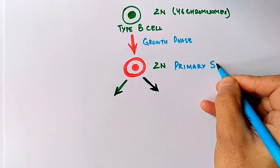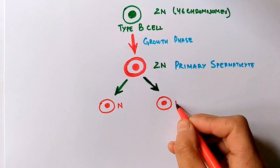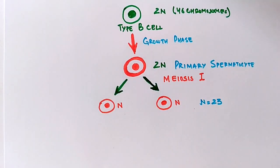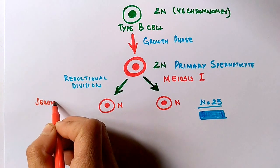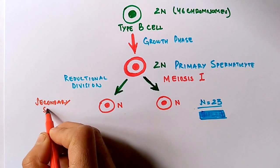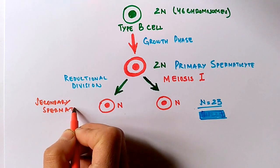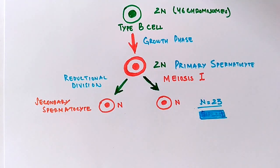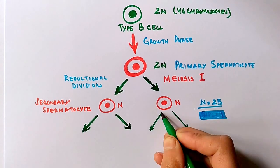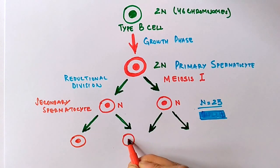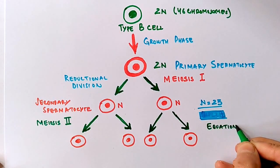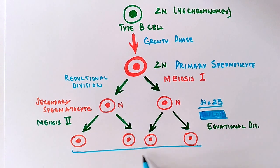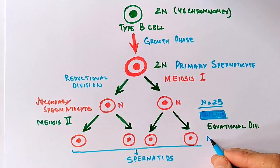The primary spermatocyte, which has 46 chromosomes, divides into secondary spermatocytes, which have n chromosomes — that is, 23 chromosomes. This division is by meiosis I, reducing the chromosome number, which is why it is called reductional division. The secondary spermatocytes further divide into spermatids, and in spermatids the chromosome number remains n — 23 chromosomes — because this is meiosis II, an equational division, not reductional.